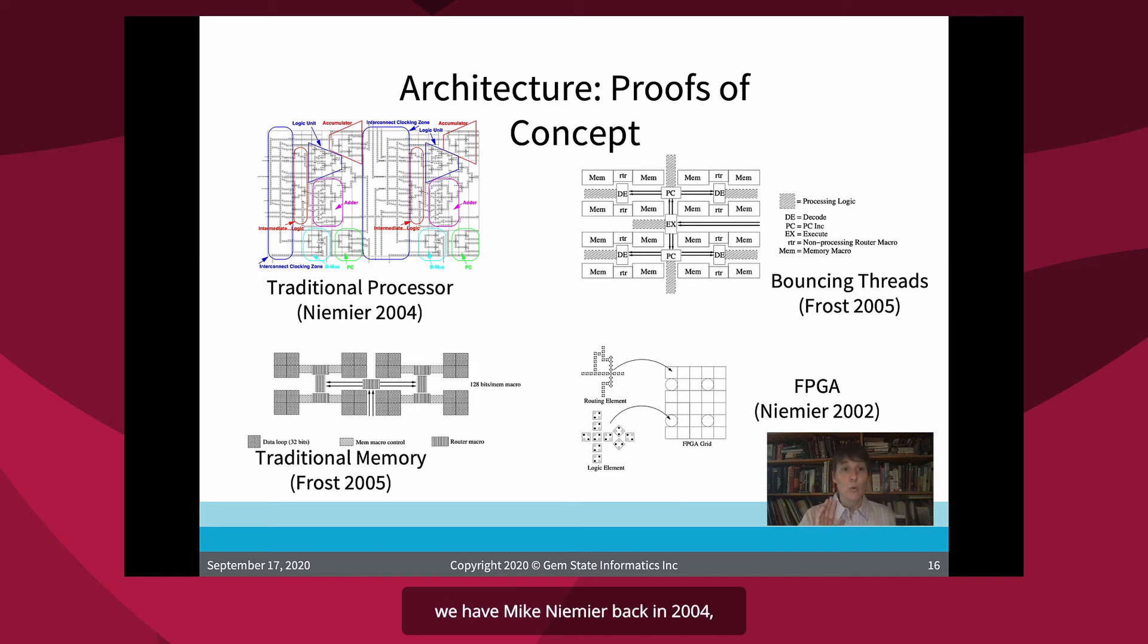Now, as far as proof of concepts go, we have Mike Niemeyer back in 2004, actually did a layout and of a full traditional processor, standard processor. It's a simple one. It's a proof of concept one. But there's been a, a full, a real processor designed. There's been a memory. I did. I designed a memory for my master's work. And we've done some interesting architectures. Like if you're familiar with processing and memory or traveling threads, there's also comparable analog version or analogous version and QCA called bouncing threads that we worked on. There's been work, designing FPGA. So you can take advantage of tiling with molecular, you know, with molecular architecture or molecular fabrication, being able to have regular tiles will be more conducive to building. It'll be easier to build tiles of repeated things rather than all novel and independent circuits.